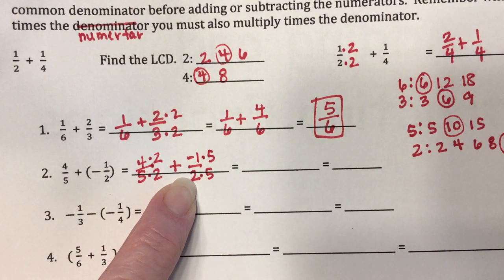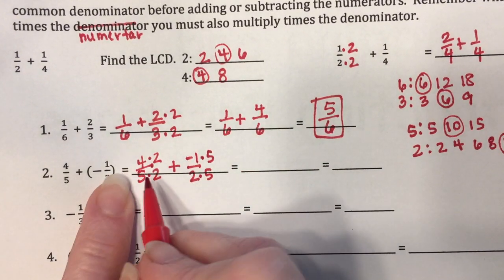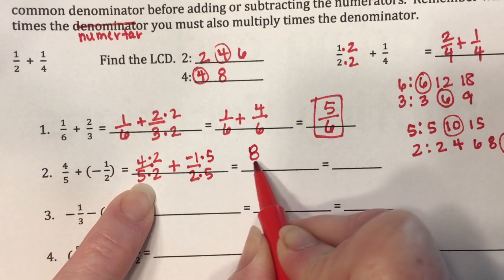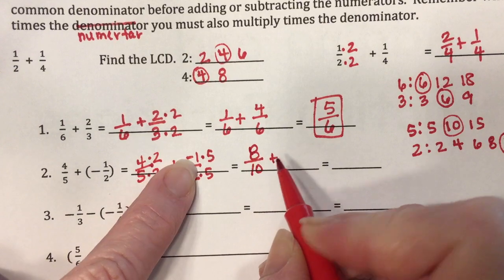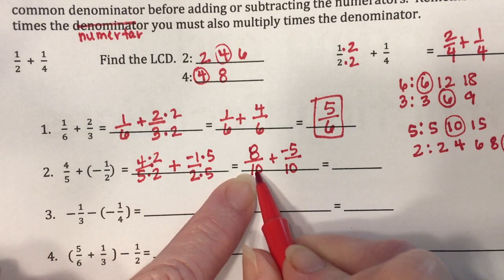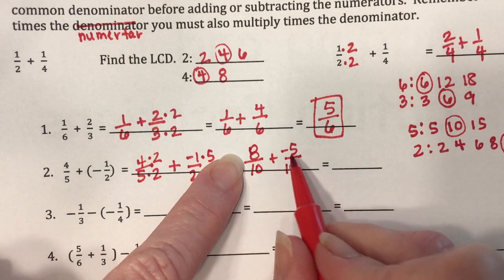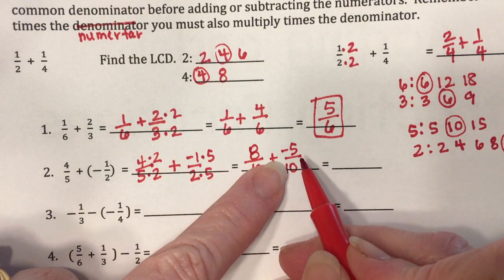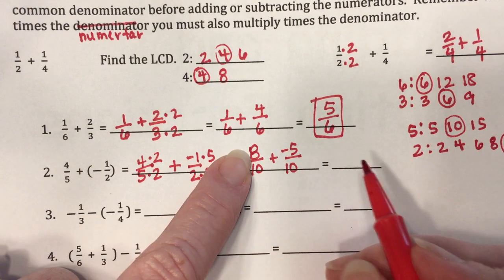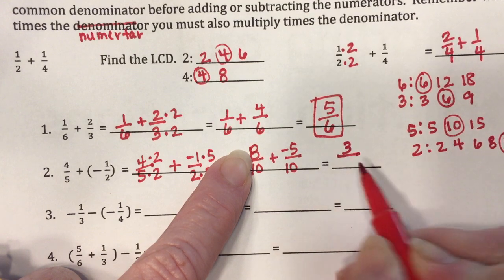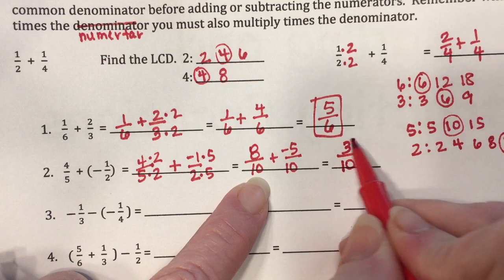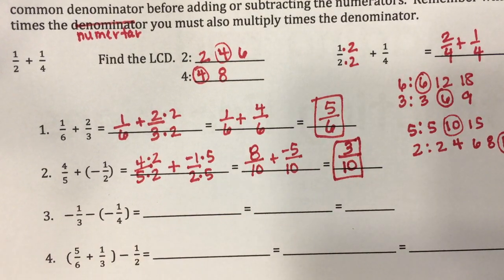For negative one over two, what times two gives me ten? Times five. So I multiply the top by five as well. Rewriting the problem: four times two is eight over ten, and negative one times five is negative five over ten. Same denominator, so I add the numerators: eight plus negative five — different signs, so I subtract and keep the sign of the larger: positive three. The answer is three-tenths, which doesn't simplify.